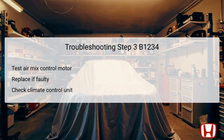The third troubleshooting step is to directly check the air mix control motor itself. After ensuring the wiring is intact, test the air mix control motor to determine if it operates correctly. If it is found to be functioning as expected, the issue may lie with the climate control unit instead, and you would need to replace the climate control unit to resolve the problem. Conversely, if the air mix control motor fails the test, it needs to be replaced. Identifying which part requires replacement based on testing helps avoid unnecessary repairs and streamlines the maintenance process.